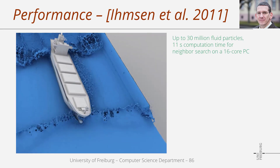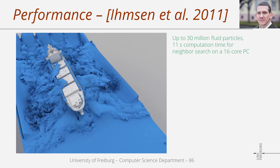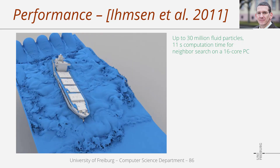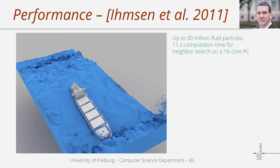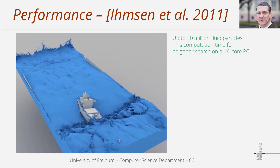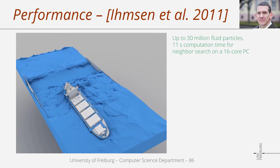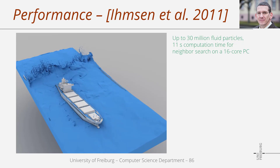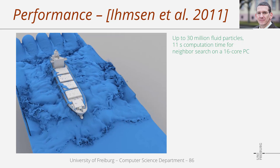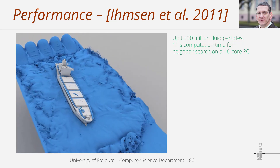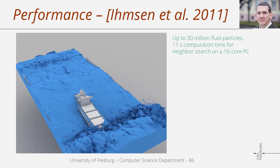Here we have an example of how 30 million fluid particles look in a simulation. There are some sources that generate fluid particles, a ship that interacts with the fluid, and for visualization purposes the interface between fluid and air has been reconstructed. In this scenario the neighbor search took 11 seconds per simulation step on a PC with 16 cores. The exact computation time is not too relevant, but you can see that recent algorithms and data structures can handle reasonably complex scenarios.